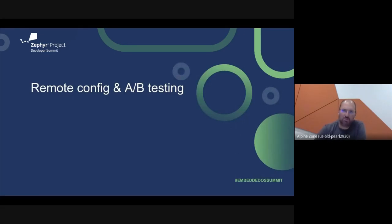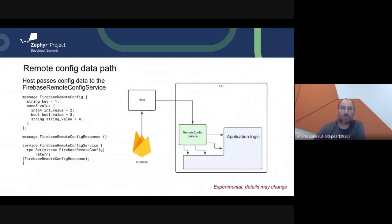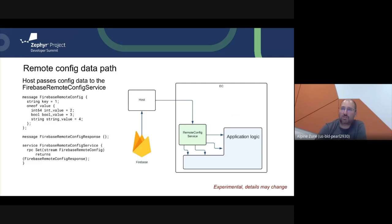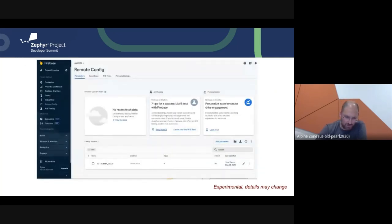Once we have events, we want to see how different users are going through things. Having remote config is the way to do that — it's just the inverse service, piping data from the server to the host. When the embedded controller gets a connection to the host, we pull the latest configurations and cache them. Firebase supports technically four types; I've only implemented three because I couldn't think of a good reason to have a blob type. We have ints, booleans, and strings, and we get a client stream — so we might get one or more of these values when the host connects to the EC.